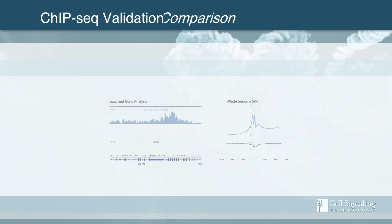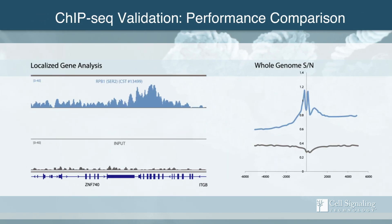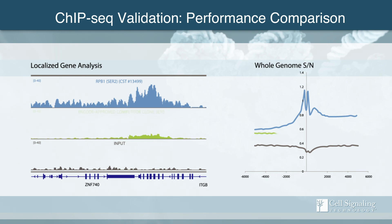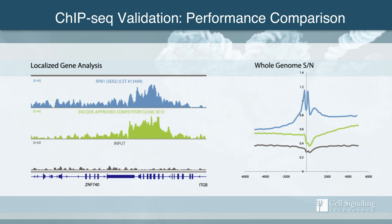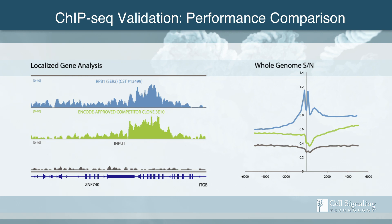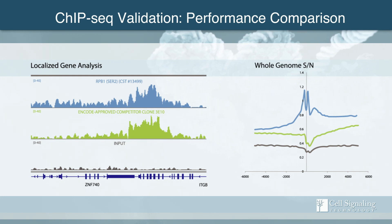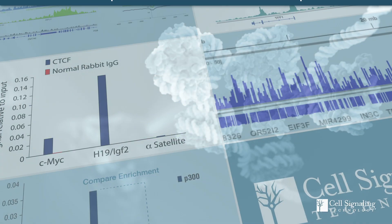Finally, the antibody's enrichment across the genome is compared to that of other antibodies used in datasets such as ENCODE, to further confirm specificity and validate that our antibody performs as expected in ChIP-seq.